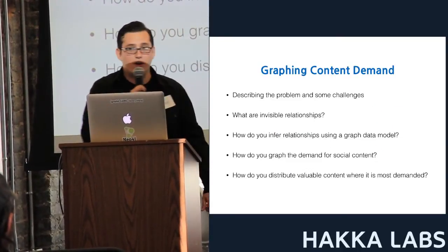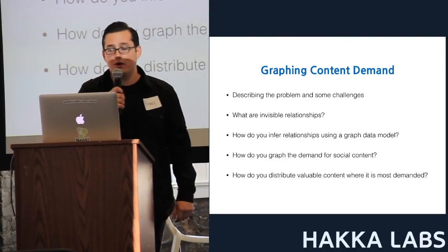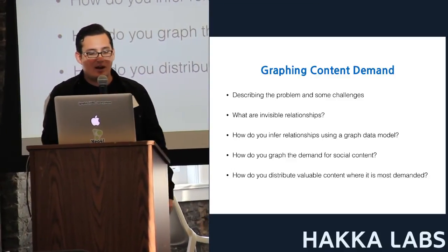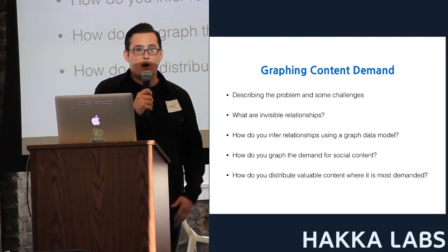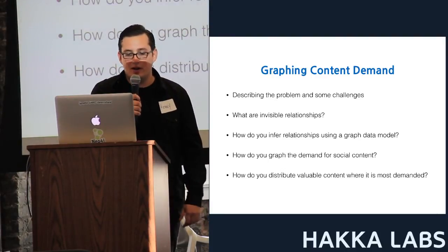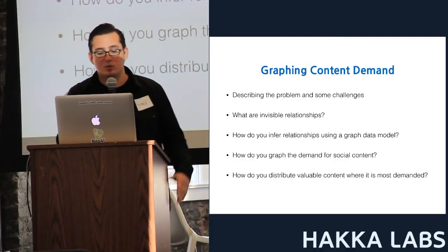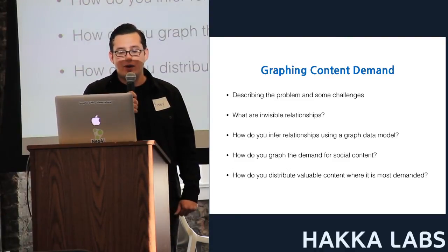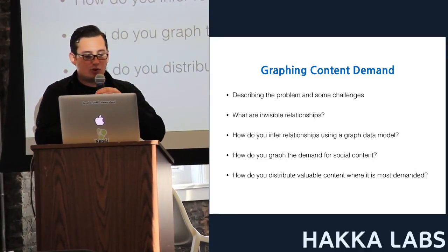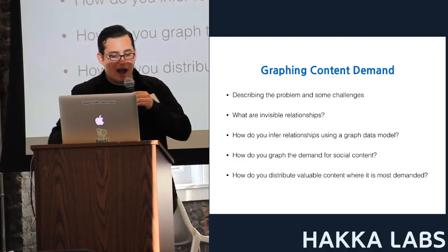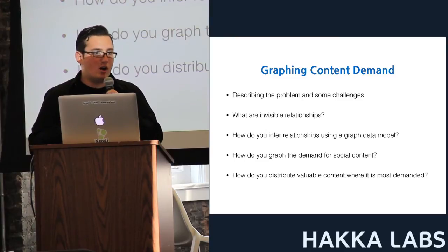Those are just a few examples of what you can use Neo4j to do. Now let's get into the next part of the talk: graphing content demand. I'm going to describe the problem and challenges, and answer a few questions: What are invisible relationships? How do you infer relationships using a graph data model? How do you graph the demand for social content? And how do you distribute valuable content where it is most demanded — essentially creating an economy for content?